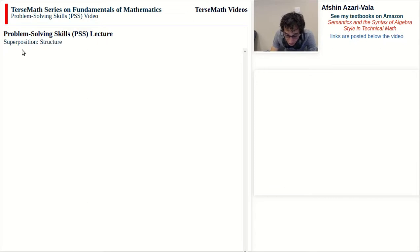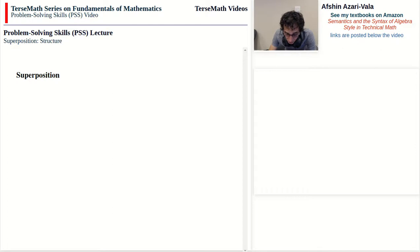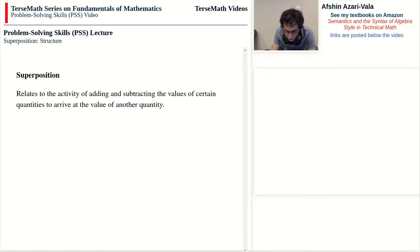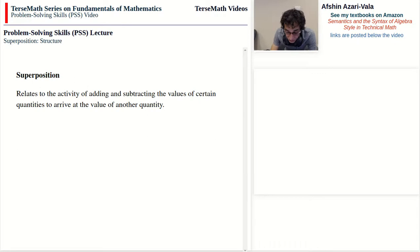The topic today is superposition and the structure of superposition problems. The first thing we should do is talk about what superposition is all about. Superposition relates to the activity of adding and subtracting the values of certain quantities to arrive at the value of some other quantity. Basically it's additions and subtractions that are under scrutiny when we work with superposition problems. Let's take a look at a few problems and the equations that go with them and see how we break the equation down along the lines of superposition.